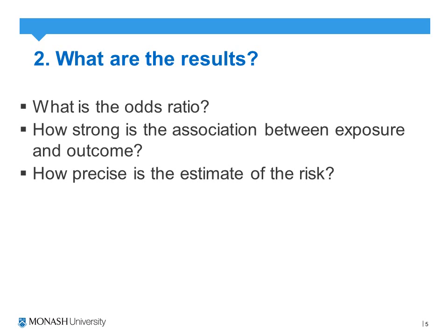The second question asks how strong is the association between exposure and outcome. We describe the odds ratio directly: for example, an odds ratio of 1.5 means the exposure is associated with a 1.5 times increase in the risk of the outcome. Alternatively, we can express this as a relative risk increase — an odds ratio of 1.5 means exposure to this risk factor increases the risk of the outcome by 50%.